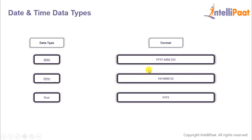After that we have the TIME data type, which helps us to specify the time in a standard format. Let's say I want to store the time 8:30 AM and 23 seconds. First I'll specify the hour, which would be 08; then the minutes, which is 30; and finally the seconds, which would be 23. Then we have the YEAR data type, which just holds the year value such as 1995 or 2011.